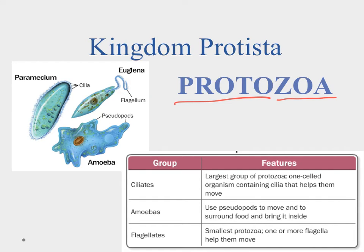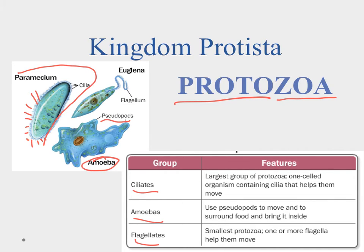Animal-like protists are generally grouped by how they move around. We have three groups: the ciliates, the amoebas, and the flagellates. The ciliates — like the paramecium — have tiny little hairs that stick off the cell and beat like oars on a boat. The amoebas have pseudopods that extend out and fill in, giving them a squishy kind of movement. Finally, the flagellates — like the euglena — have a flagella tail. Protozoans tend to feed on other things, so they're heterotrophic.